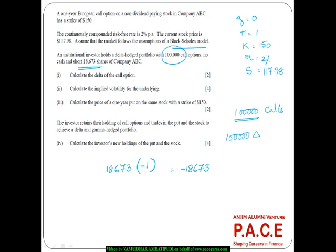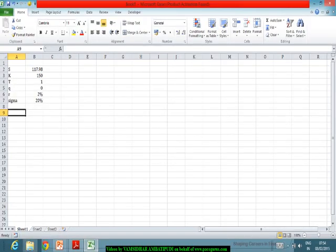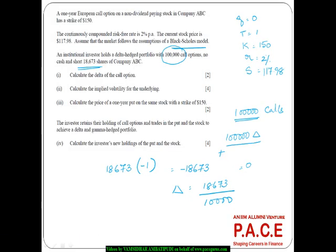Because it's a delta-hedged portfolio, the summation of these two positions should give a delta of 0. The portfolio delta is 0, so the delta of the call options is 100,000 × delta, and the delta of the shares is minus 18,673. From here, the delta of the option is 18,673 divided by 100,000, giving a delta of 0.18673.